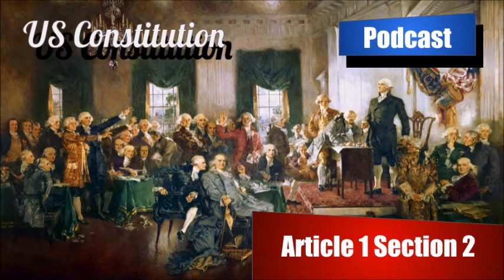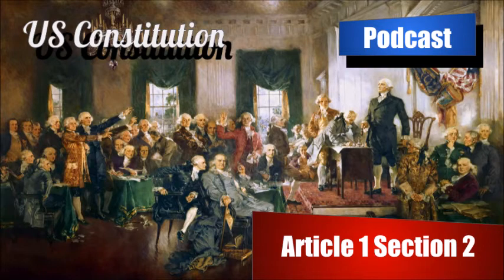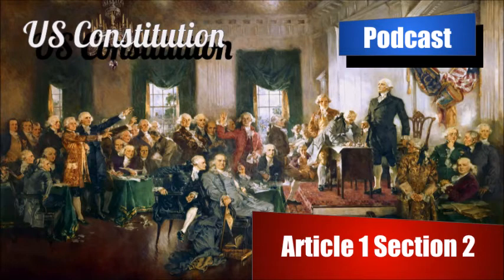If we stuck to this constitutional ratio, we would have almost 11,000 members in the House of Representatives, but in 1929 they limited the number to 435 members, which we still have today, making it a much more reasonable number. Otherwise, we're talking about a minor league stadium full of people trying to decide on things. But each state shall have at least one representative, so even if your population is less than 30,000, you would still get one representative.